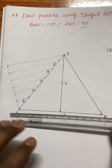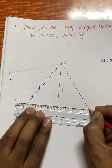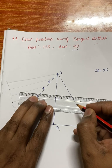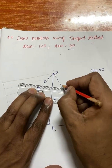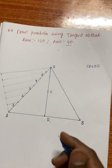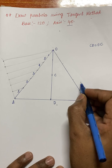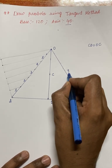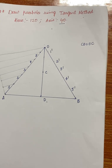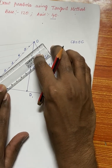Place your drafter parallel and mark the equal divisions on the OB side as well. Now number OB in reverse order from the bottom — so the points are labeled 1', 2', 3', 4', 5' going upward. This reverse numbering is because it is a tangent method, and corresponding numbered points form the tangents.